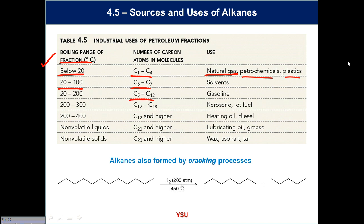Moving up to higher boiling fractions: kerosene for heating in winter, and jet fuel. Each fraction is distilled, separated, and sold for different requirements. Higher alkanes—with weaker molecular forces—can become solids. Think about what's been happening on Belmont or Fifth Avenue recently with resurfacing: that's asphalt, a byproduct of the petroleum industry. So very little waste—it's all used because it's so expensive.